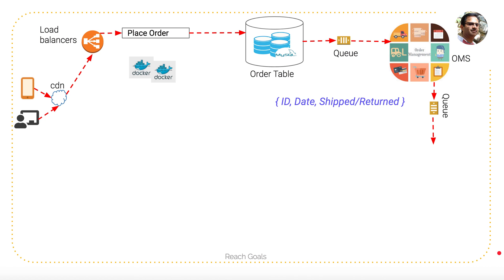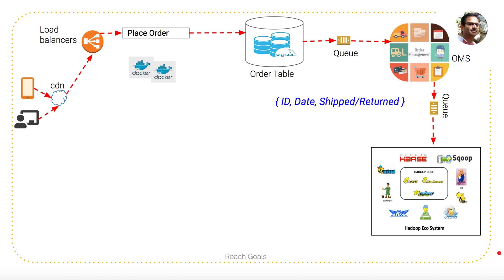From the queue, the data is passed to the Hadoop cluster. The Hadoop cluster can do parallel processing of data, which means we can get the output as soon as possible. There are many tools available in Hadoop where you can write queries to generate data quickly, and you can get streaming data from the queue for fast processing. Once the data is processed at the Hadoop level, it is sent to a sanitizer, where we can process the data again and figure out if there are any issues before sending it to the customer.